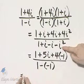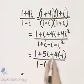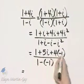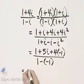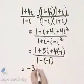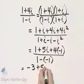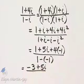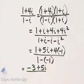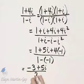So let's see what we have. We have 1 minus 4, that's negative 3 plus 5I all over 1 minus a negative 1, that's 1 plus 1 or 2.